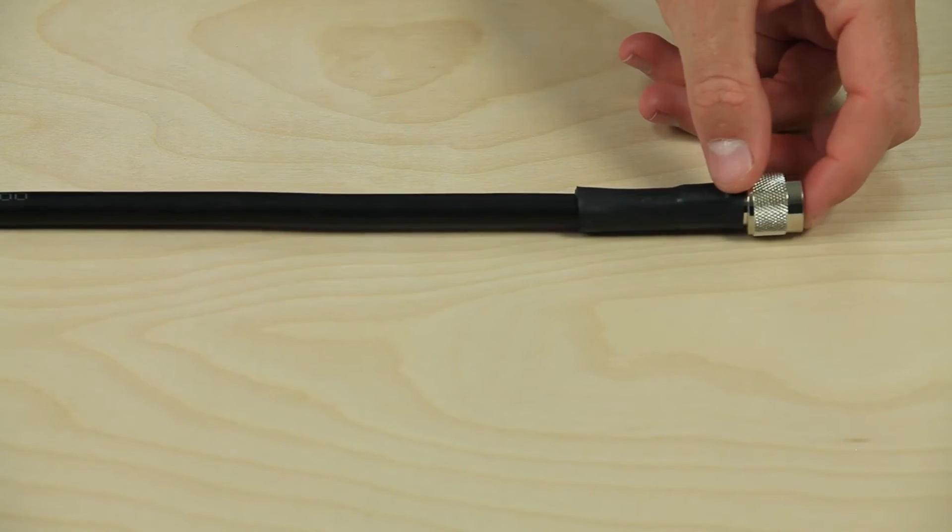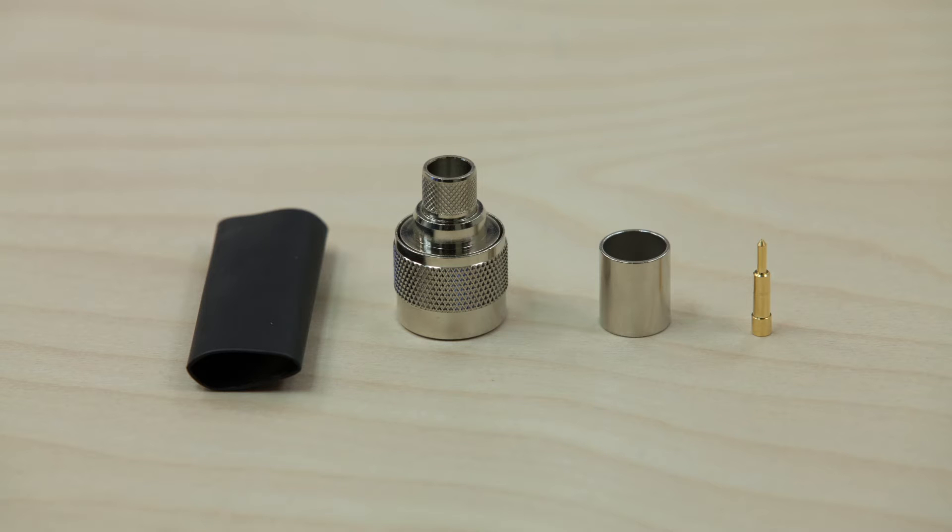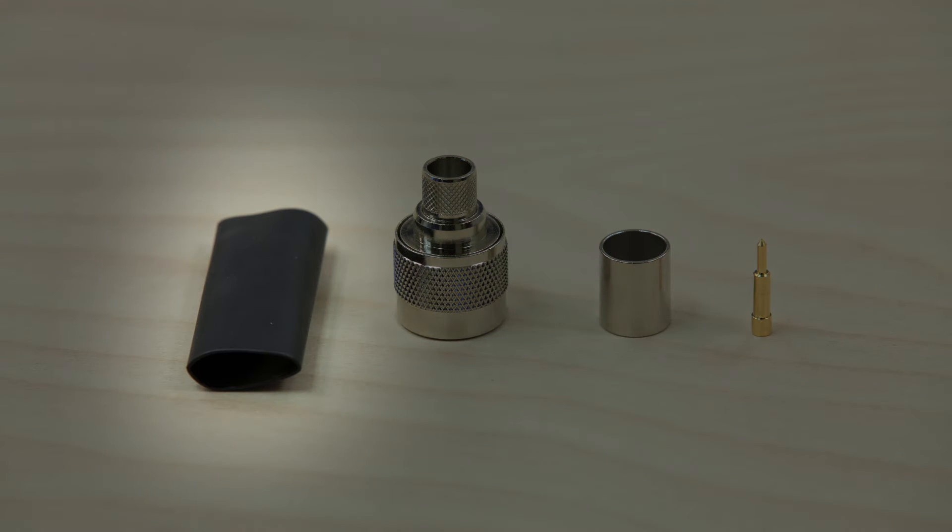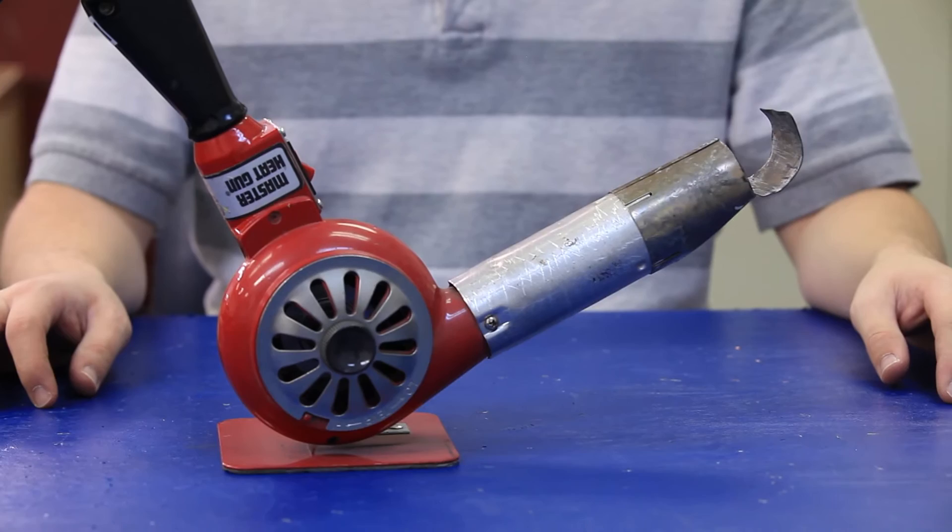You'll also need some Wilson 400 cable and all the components for the connector. We always use heat shrink tubing on our cables. This is optional but we'd recommend it. You'll need some heat shrink tubing and a heat source if you choose to do this step.